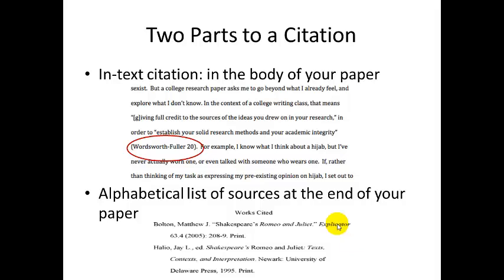So there are two parts of a citation. The in-text citation, as you can tell from the name, is the part of the citation that goes in the body of your paper, in your text. Here's an example: in an essay about sexism in college classes, a person quoted a specific passage from some source. They tell us in the text that this is from Wordsworth Fuller and page number 20 — this is an MLA-style citation. The important thing is that it's included in the body of your paper: right after the quote, you get the citation with the last name of the author and the page number.